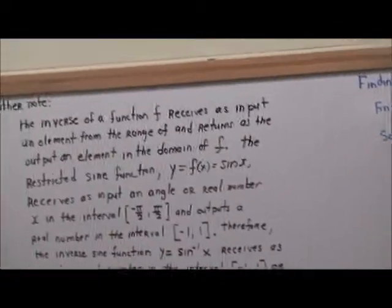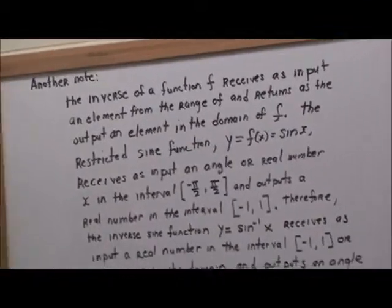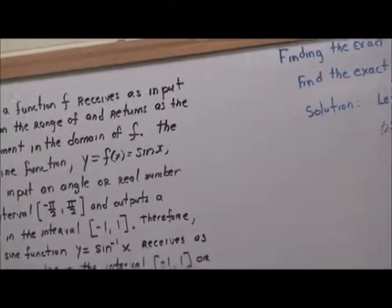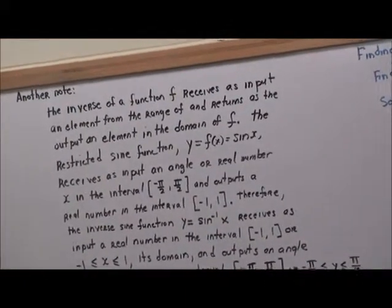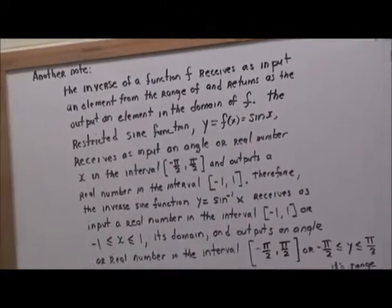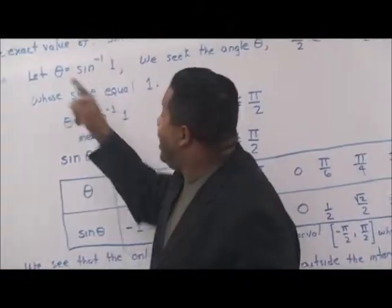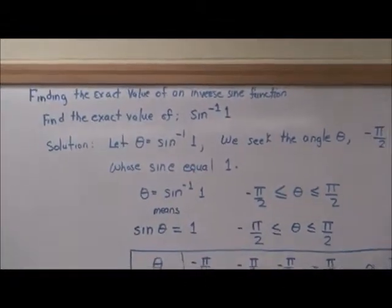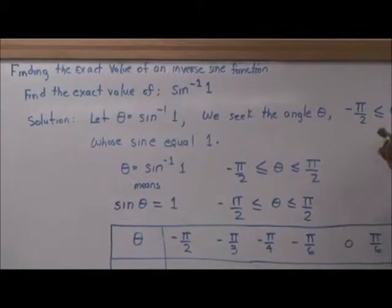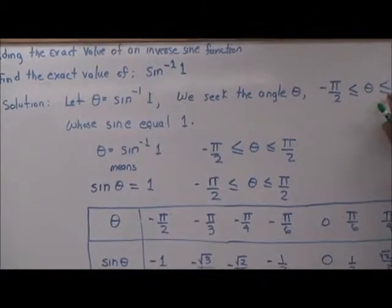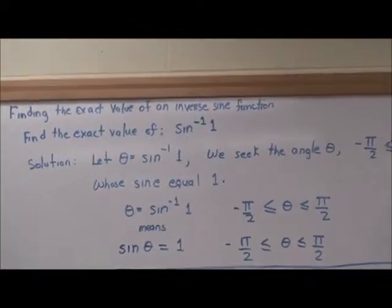Now we're going to talk about finding the exact value of an inverse sine function. We want to find the exact value of sine inverse of 1. We let theta equal sine inverse of 1, and we seek an angle theta which is on the interval negative pi over 2 less than or equal to theta less than or equal to pi over 2.